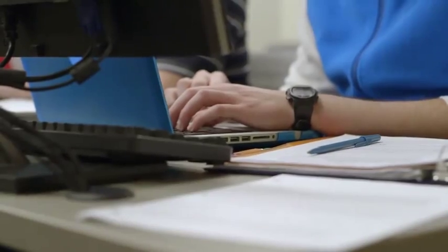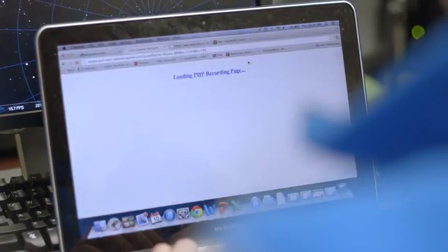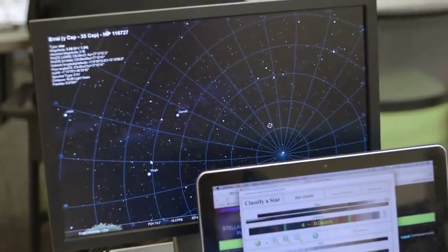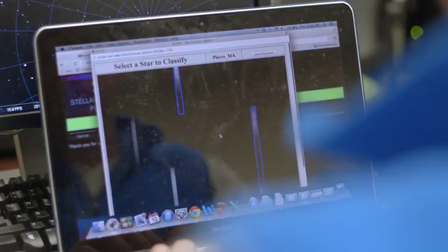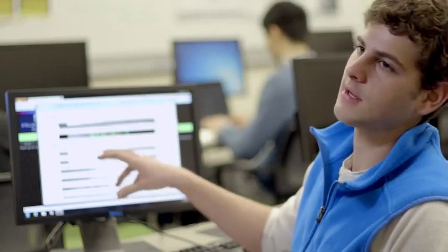Today I'm trying to figure out what spectral type star is most common in our universe, and I'm going about that using this program here, SCOPE, where you look at the spectral lines of various star clusters and try to match it up with different known spectral type stars.